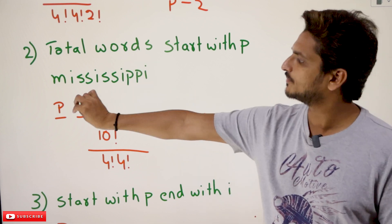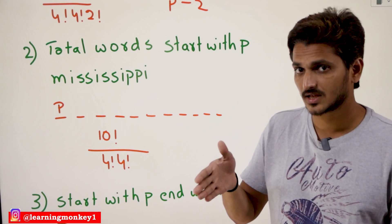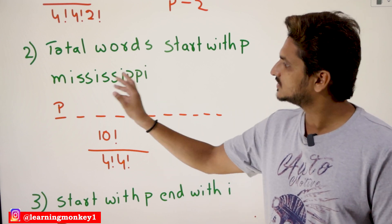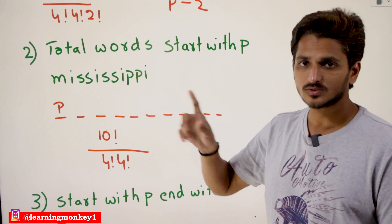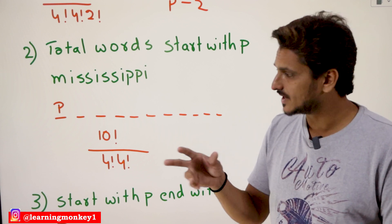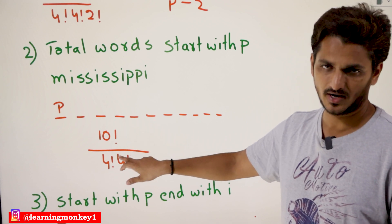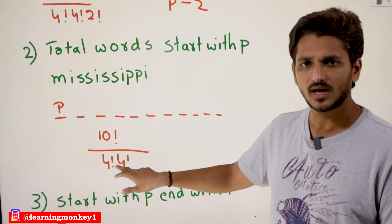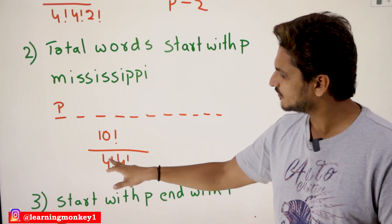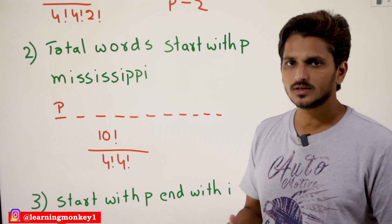If you take one of the P's out, how many characters are there? 10 characters are there. In those 10 characters, do you have P repeated? No, we don't have P repeated because one P is taken out and in the remaining characters we have only one P. So the remaining 10 characters can be arranged in those 10 positions in 10 factorial ways, divided by the repetitions: S repeated 4 times, I repeated 4 times — so 10 factorial divided by 4 factorial and 4 factorial. It is very simple.